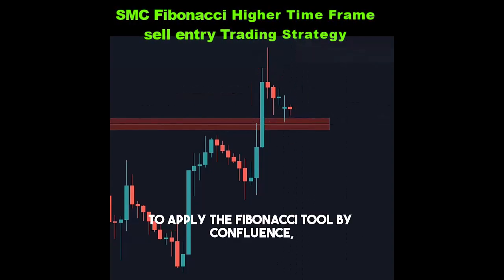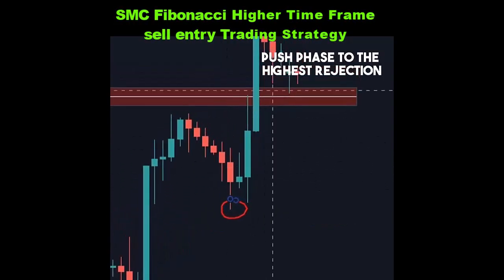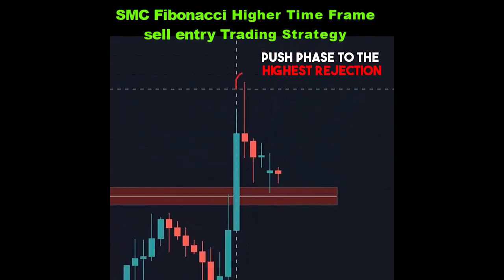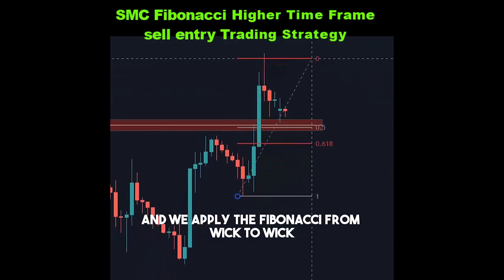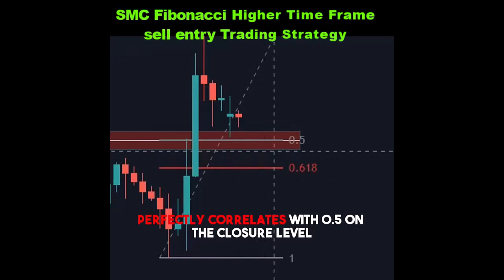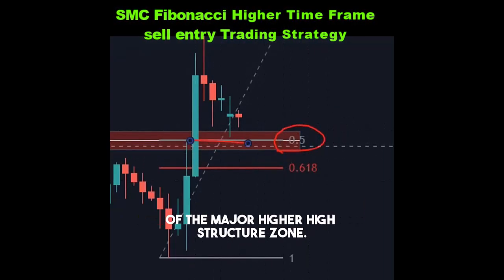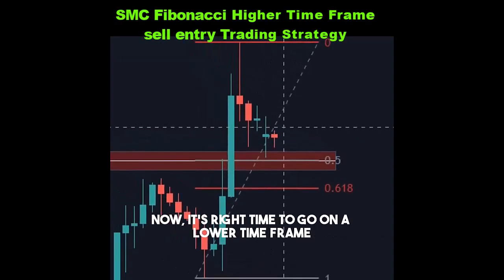To apply the Fibonacci tool by confluence, we need to look for the lowest rejection of the push phase to the highest rejection, and we apply the Fibonacci from wick to wick. We can see the price here almost perfectly correlates with 0.5 on the closure level of the major higher high structure zone.